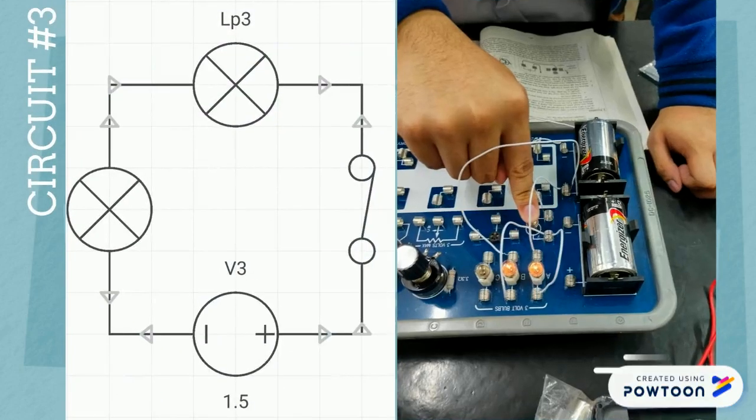The intensity of light that a single light bulb generates in circuit number 3 decreased as another light bulb was added to the circuit, yet they both attained the same intensity of light when it was added, noting that it is still in series.